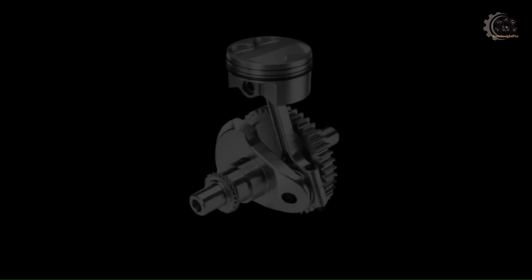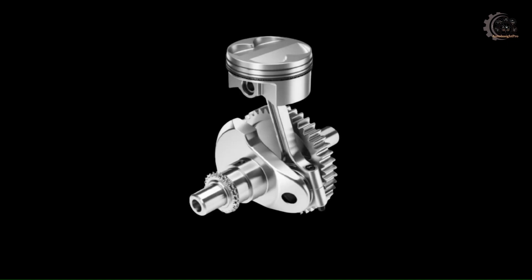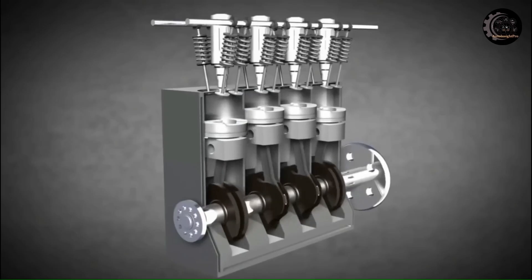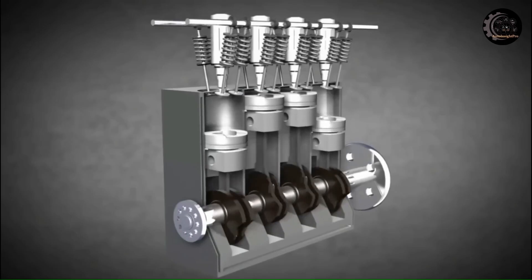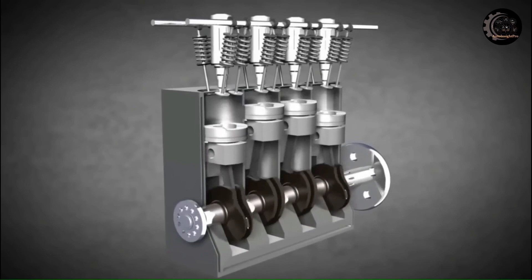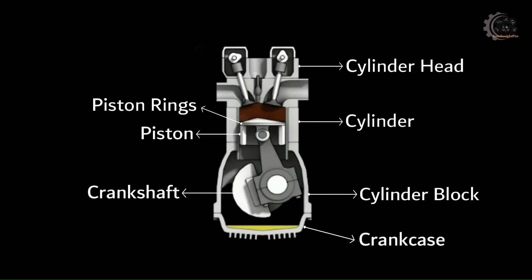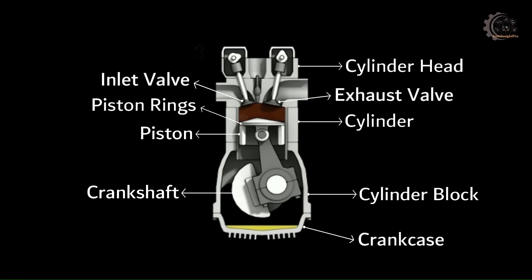Crankshaft is a mechanical component used in a piston engine to convert reciprocating motion into rotational motion. Crankcase is the main housing at the bottom of the engine, providing support for the cylinder and crankshaft bearings. Valves allow air into and out of the cylinder. Crank pin connects the crankshaft to the connecting rod for each cylinder.